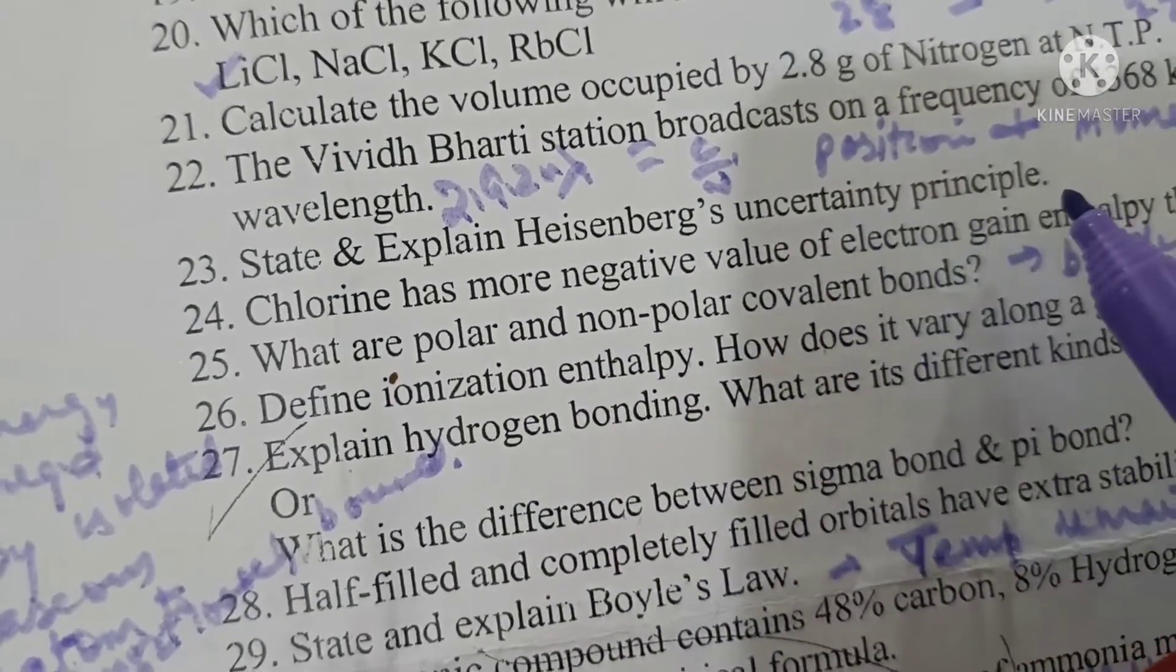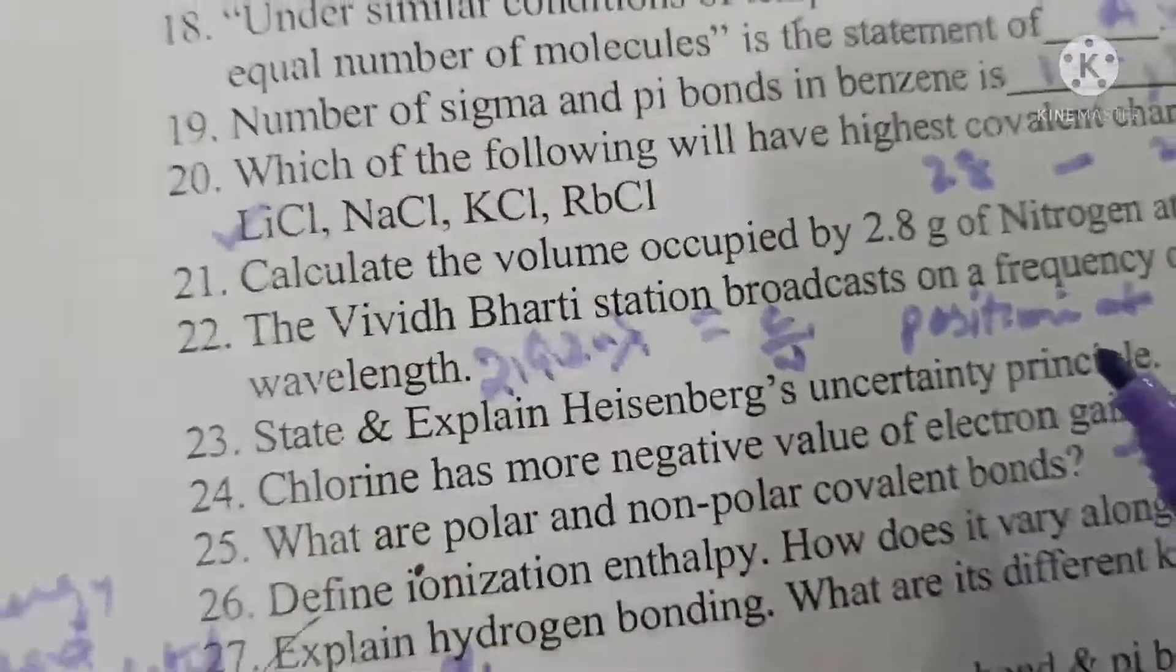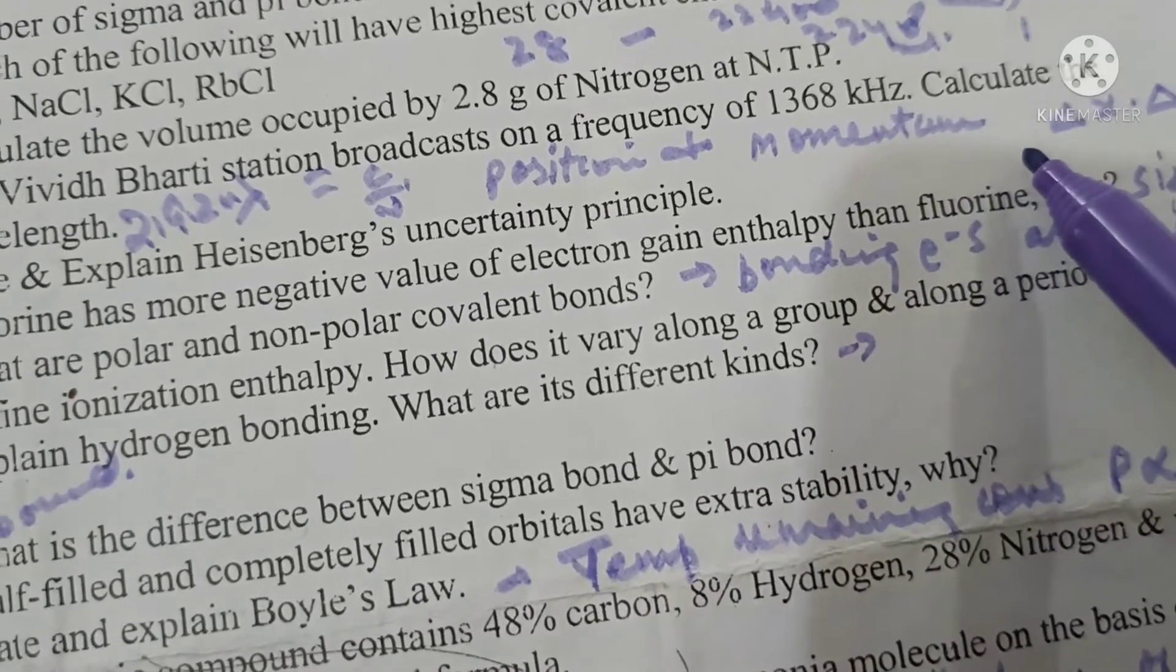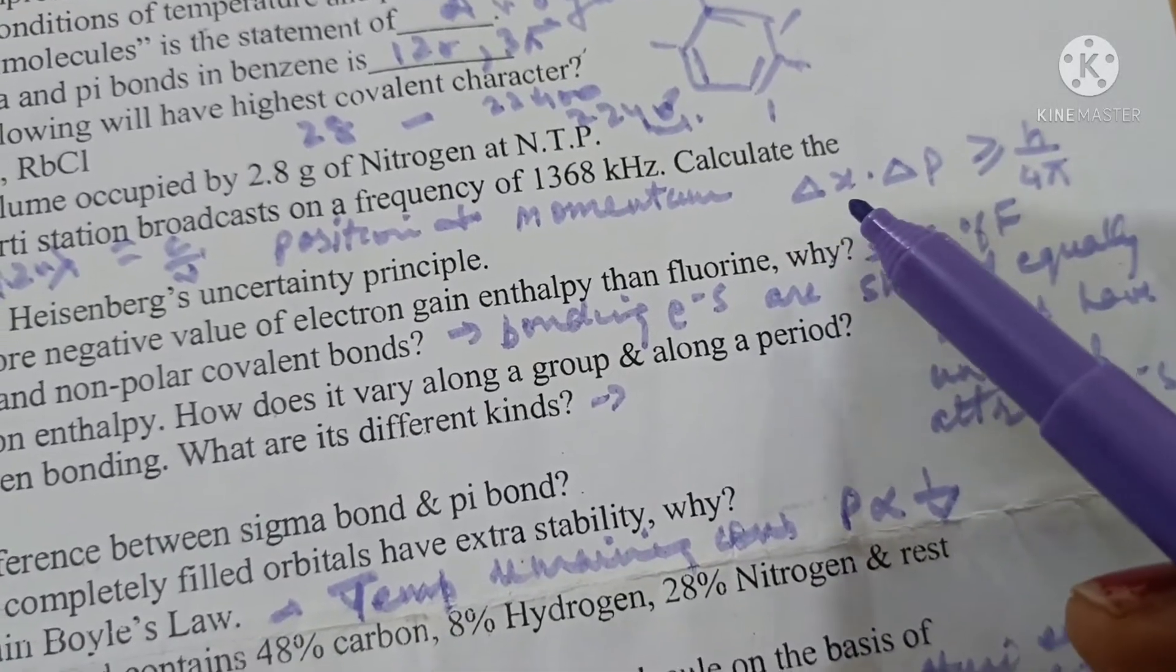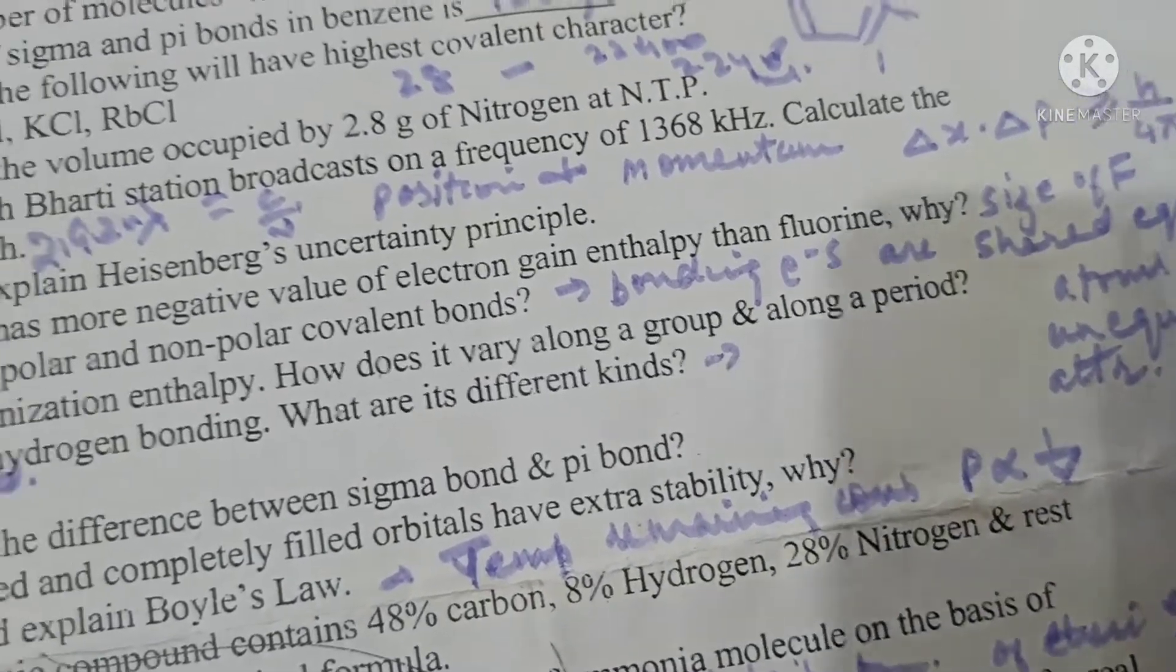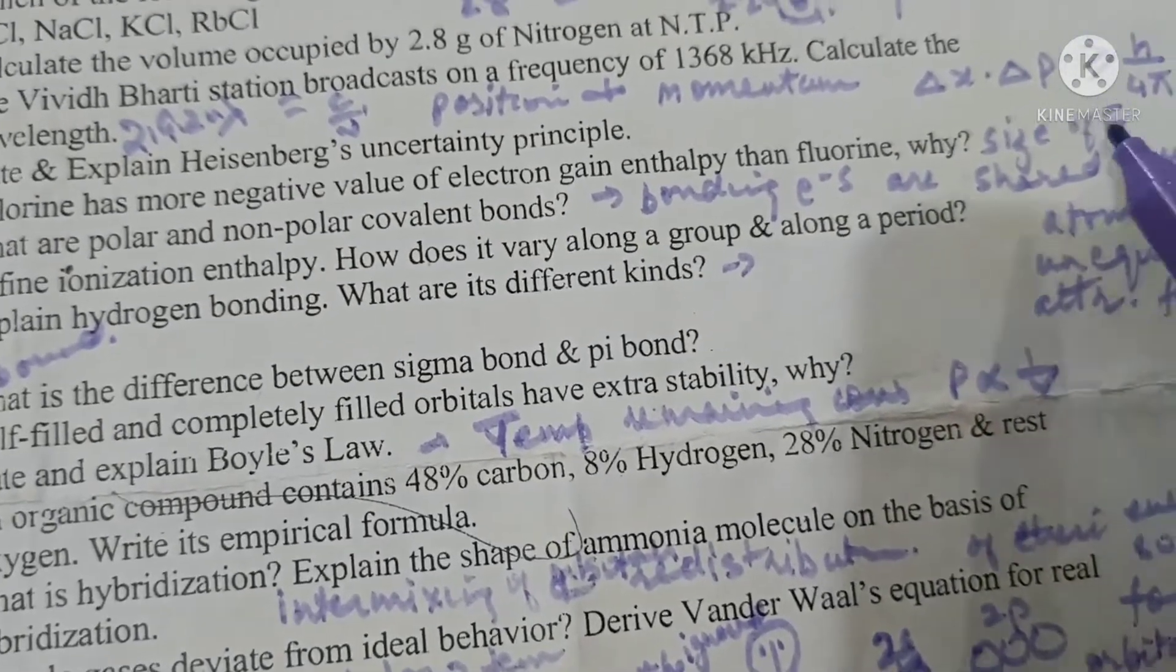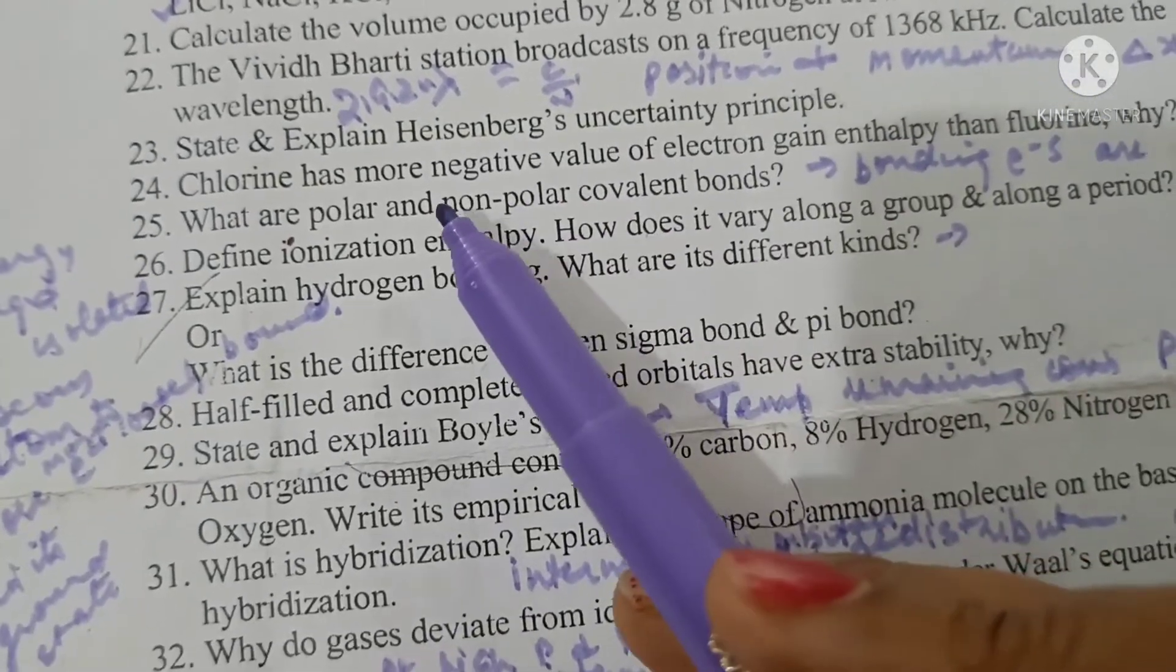State and explain Heisenberg's uncertainty principle. The Heisenberg's uncertainty principle states that it is not possible to simultaneously locate the position and momentum of a microscopic particle like electron at the same instant and mathematically delta x, uncertainty in position, and uncertainty in momentum is always greater than or equal to h by 4 pi. Chlorine has more negative value of electron gain enthalpy than fluorine. This is because of small size of fluorine atom which causes repulsion of the electron resulting in lesser value of negative electron gain enthalpy.